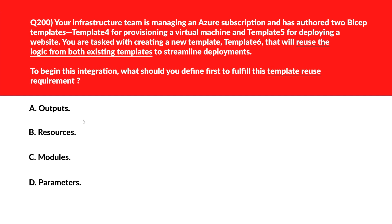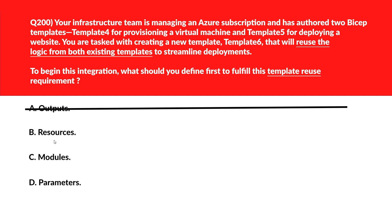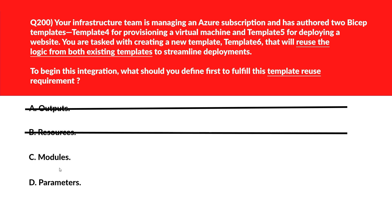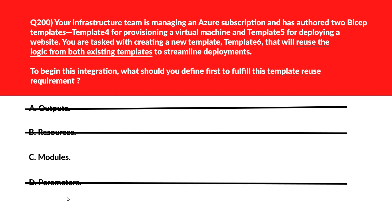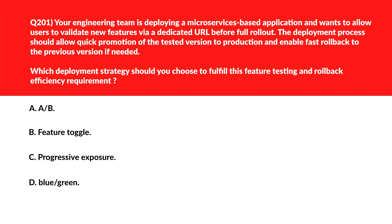This question is about Bicep templates. Option A, Outputs, expose values after deployment but don't enable reuse of logic from other templates — incorrect. Option B, Resources, define infrastructure but don't reference external templates — wrong. Option C, Modules, allow us to encapsulate and reuse logic from other Bicep templates, enabling composition and maintainability — that looks good. Option D, Parameters, allow input customization but don't facilitate importing logic from other templates. We'll lock option C, Modules, as the right answer.